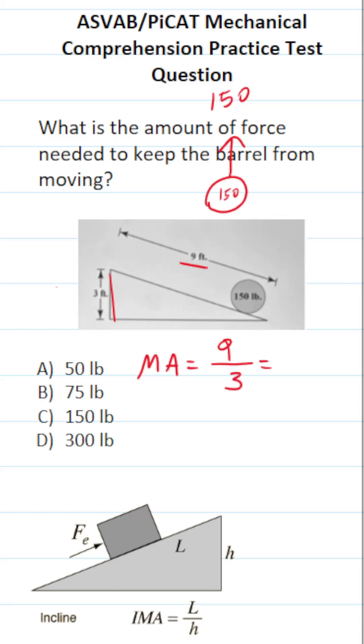9 divided by 3 is 3. So this inclined plane gives us a mechanical advantage of 3. What does that mean? It means it's 3 times easier to move this 150 pound weight than picking it straight up off the ground.